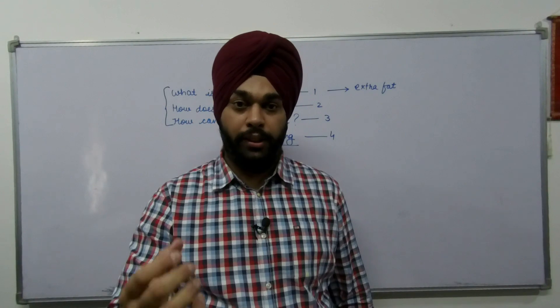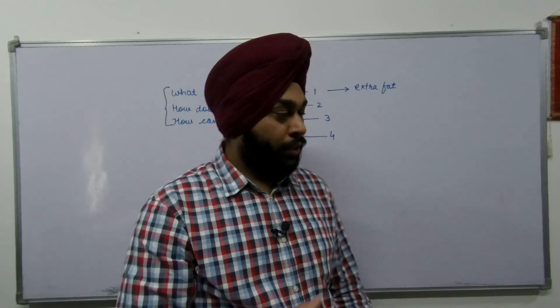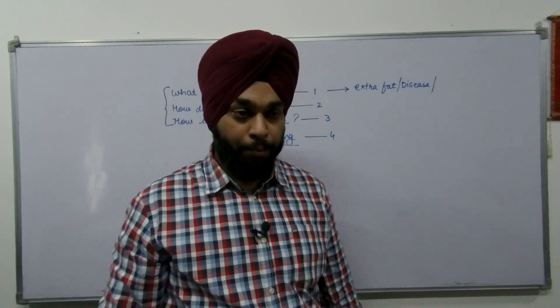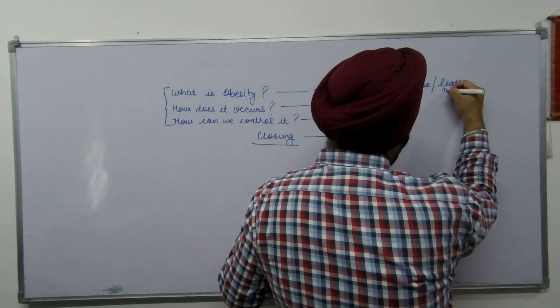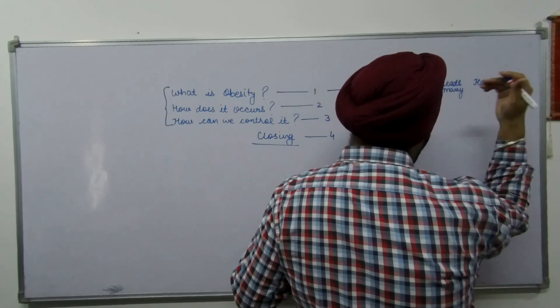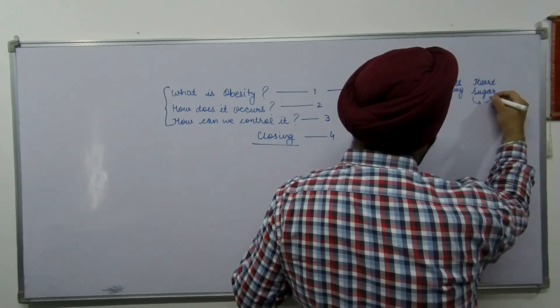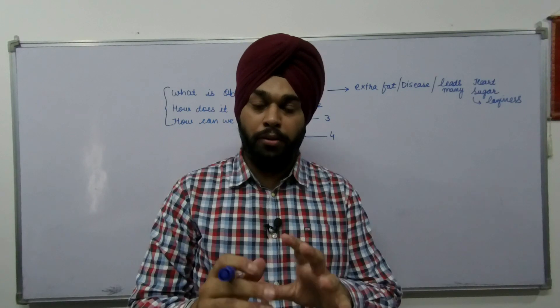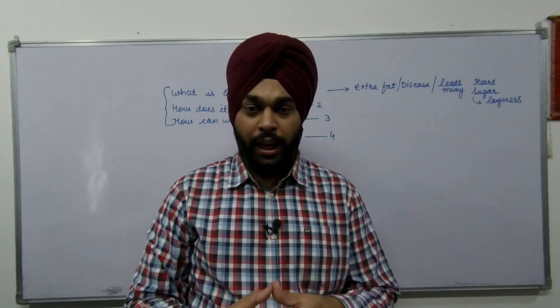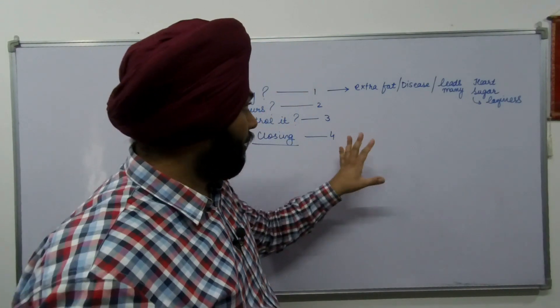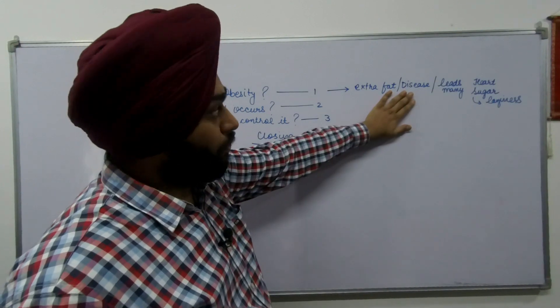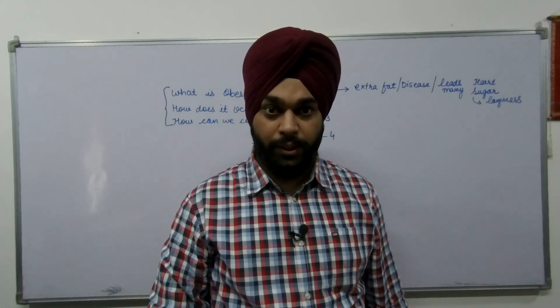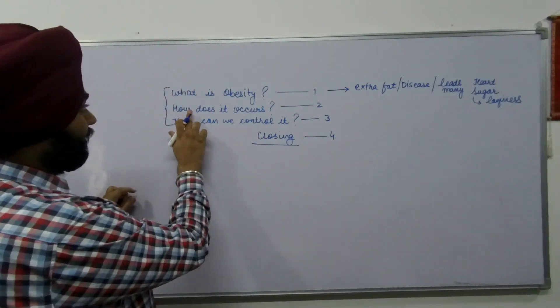My first line will be explaining obesity. Obesity is the extra fat on the body. It is a dangerous disease because it leads to many other diseases like heart problems, sugar, and it is also one of the main reasons behind laziness of a person. I have written only 4 lines and it will be around 30 to 40 words. I have just given the outline about obesity. The extra fat on the body is known as obesity. It is a very dangerous disease and it leads to many other diseases as well like heart disease, sugar problems, and it also contributes to the laziness of a person. This is going to be my introduction.